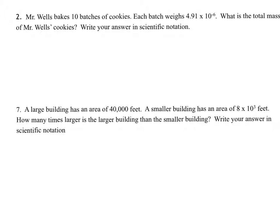So there's a few key things that we really want to take a look at. First off, there's 10 batches. Each of them weighs 4.91 times 10 to the negative 6. So whenever I see each, I have to think in my head, I need to multiply. So I'm just going to rewrite 4 times 0.91 times 10 to the negative 6, and I'm going to multiply that all by 10.